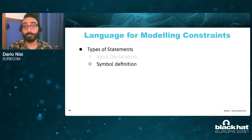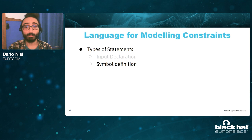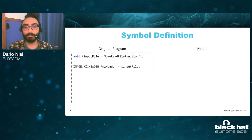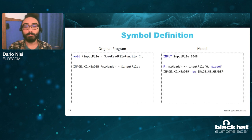The second type of statement is the symbol definition statement, in which we create new variables with mnemonic names whose values are given by a set of mathematical operations on the input file. In the original program, for example, the software is creating a new variable called mzHeader that is taken directly from the input file. We model this in our language by introducing a symbol declaration statement, where we have the mzHeader assigned a value computed using the original input file.